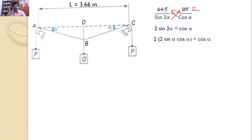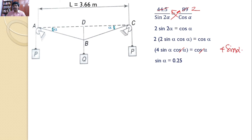Since sine(2·alpha) equals 2·sin(alpha)·cos(alpha), we get 4·sin(alpha)·cos(alpha) equals cos(alpha). Cancelling cos(alpha) from both sides gives 4·sin(alpha) equals 1, so sin(alpha) equals 0.25. From that, alpha equals 14.48 degrees. Therefore both angles are 14.48 degrees.